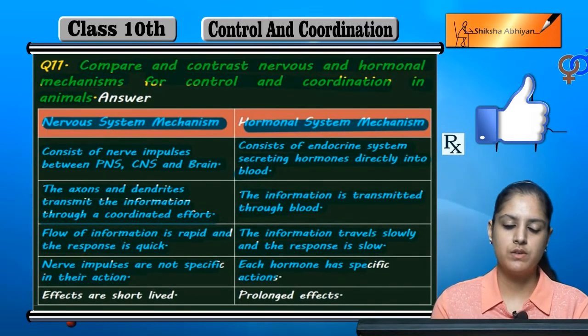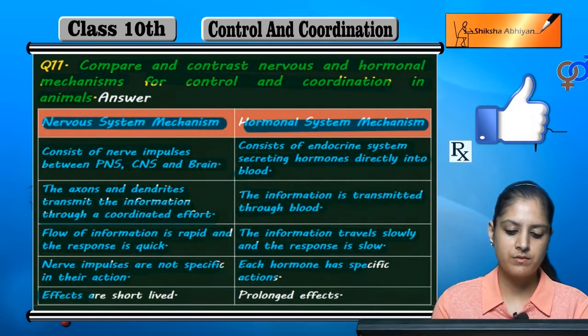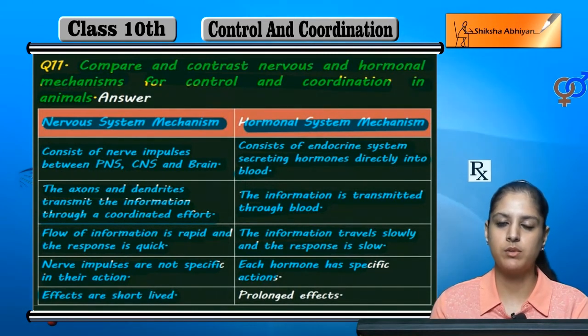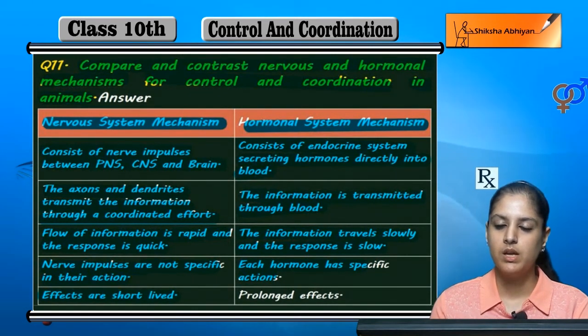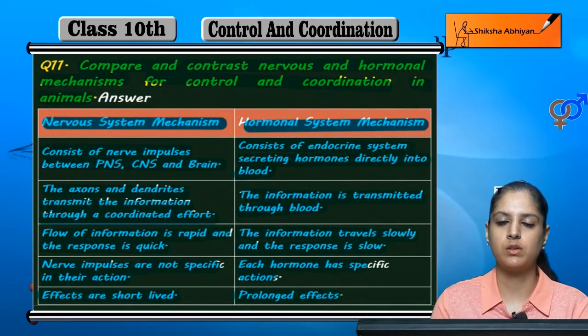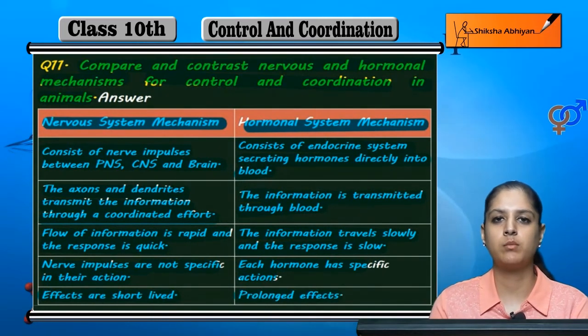In the nervous system, the effects are short-lived. However, in the hormonal system, the effects are prolonged and last for a very long time.